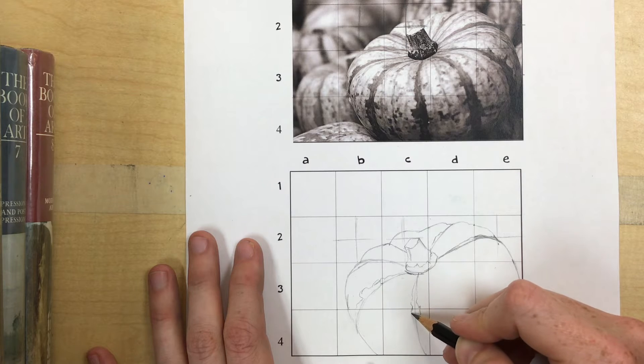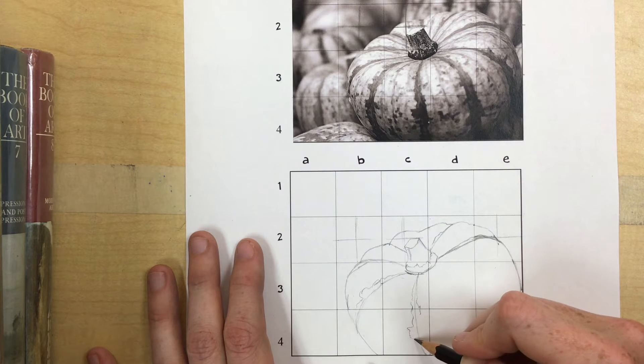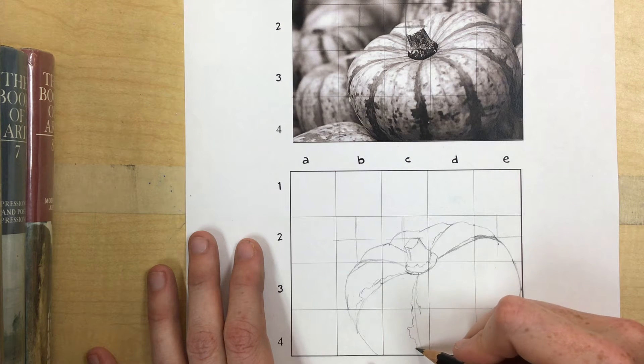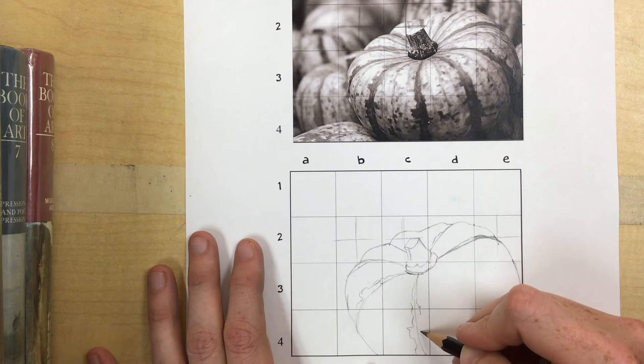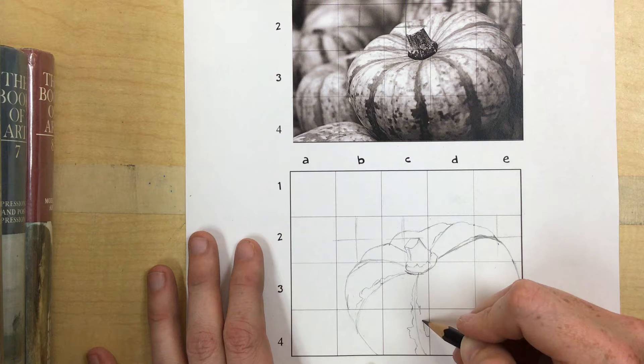But it's a good tool to be able to pull out of your pocket when you need to. Okay, so I'm real lightly doing this. I don't want to do anything dark until I'm positive it's in the right spot. Down here I see this even like crosses over a little bit so it gets quite a bit wider.